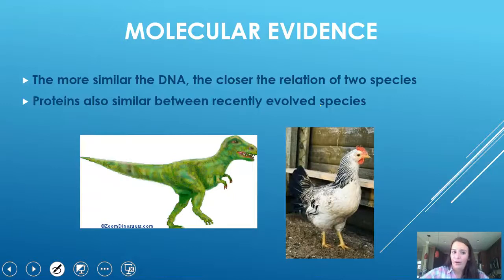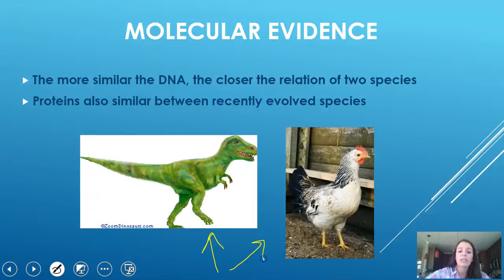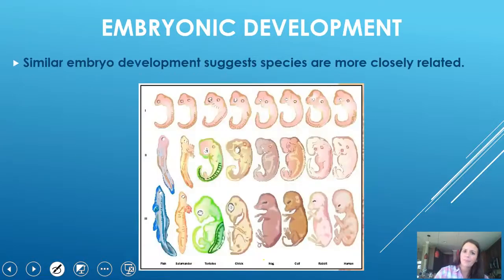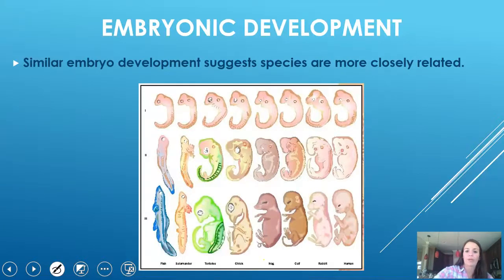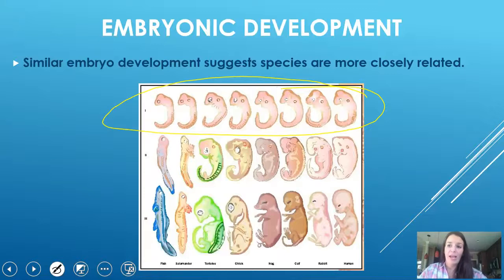There is also molecular evidence: the more similar the DNA is between species, the closer their relationship. For example, dinosaurs and chickens have a lot of DNA in common, showing they recently diverged from a common ancestor. Finally, there is embryonic development — similar embryonic development across vertebrates suggests they all share an ancestral relative, since they all look the same initially and have the same features.